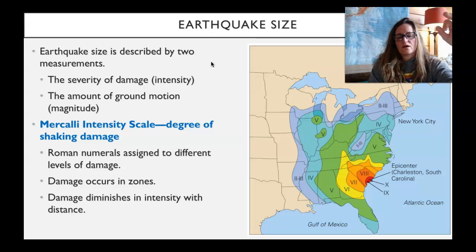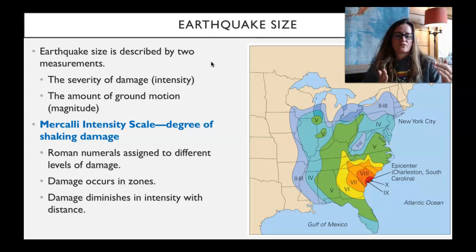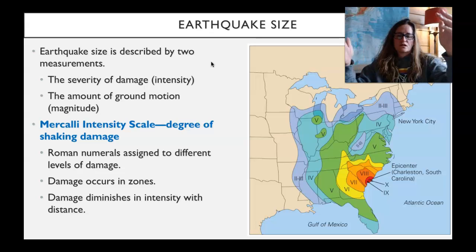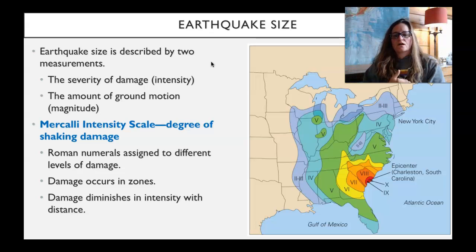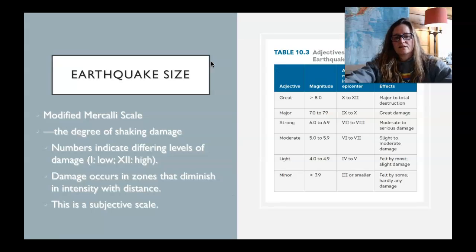We note the Mercalli scale by Roman numerals, and the damage is shown in these zones. On the map of the southeast, you see there's a red area where the epicenter is right around Charleston, South Carolina, and away from that in colors with the Roman numerals, it's the areas where there's decreasing damage away from the epicenter from the earthquake in Charleston. The damage decreases away from that epicenter. That's the Mercalli intensity scale.